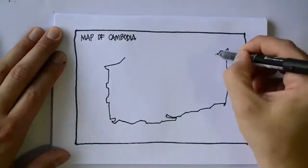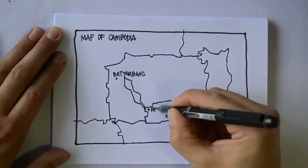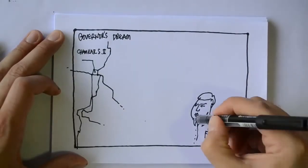Once upon a time, in a city far away, in the northeast of Cambodia, the governor of Batambong was thinking about his vision for the city.